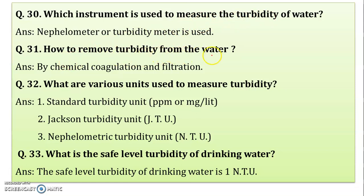Next: how to remove turbidity from water? Turbidity causes bad effects — in textile applications it does not produce the proper stain when using dye to color yarn. To remove turbidity, chemical coagulation is used: alum and ferrous sulfate are added, followed by filtration to get clear water.